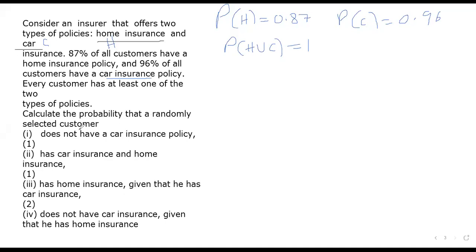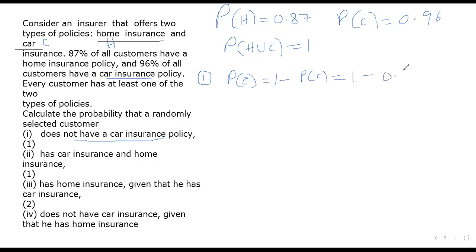Part one: find the probability that a selected customer does not have car insurance. We are looking for the complement of C. So C complement = 1 minus P(C) = 1 minus 0.96 = 0.04.